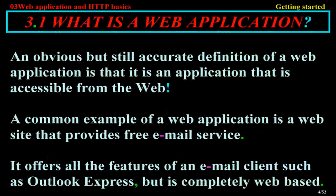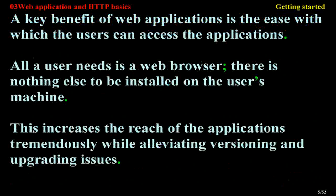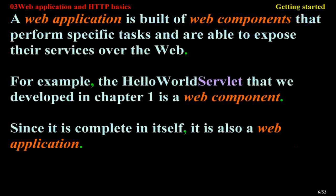What is a web application? An obvious but still accurate definition of a web application is that it is an application that is accessible from the web. A common example of a web application is a website that provides free email service. It offers all the features of an email client such as Outlook Express, but is completely web-based. A key benefit of web applications is the ease with which users can access them — all a user needs is a web browser, with nothing else to be installed on the user's machine.